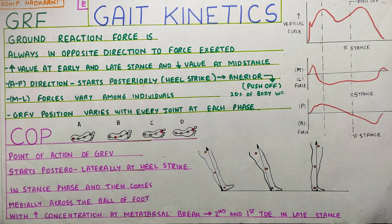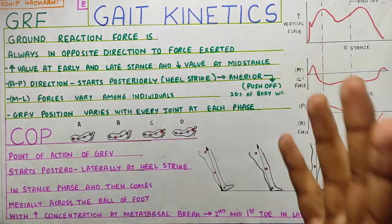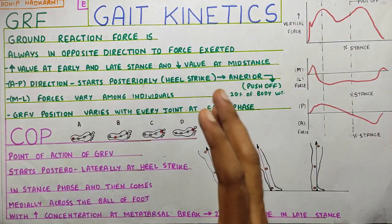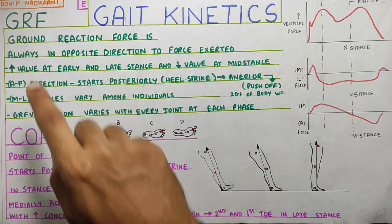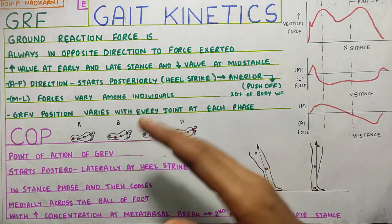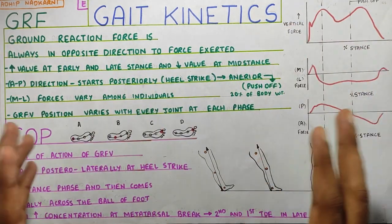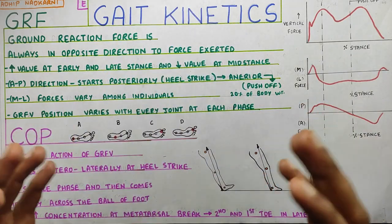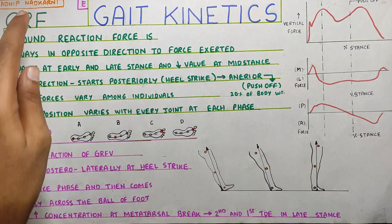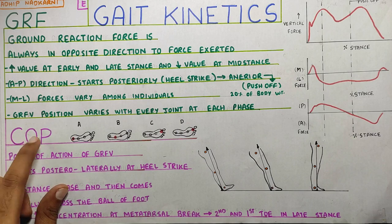In this video we are going to talk about the kinetics of the gait. Last video we covered kinematics. Here in kinetics, which is all about the forces, I will be talking about the GRF and the center of pressure. The other forces like your muscle activity will be coming in further parts of the video. So let's quickly finish these external forces, or the kinetics, that occur in gait. We are going to talk about two things: GRF, that is your ground reaction force, and COP, that is center of pressure.